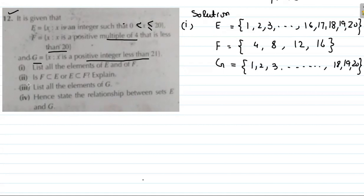For part two: is F a subset of E? Note that the symbol without an underline means proper subset, while with underline means improper subset. Let's check whether all elements of F are present in E.